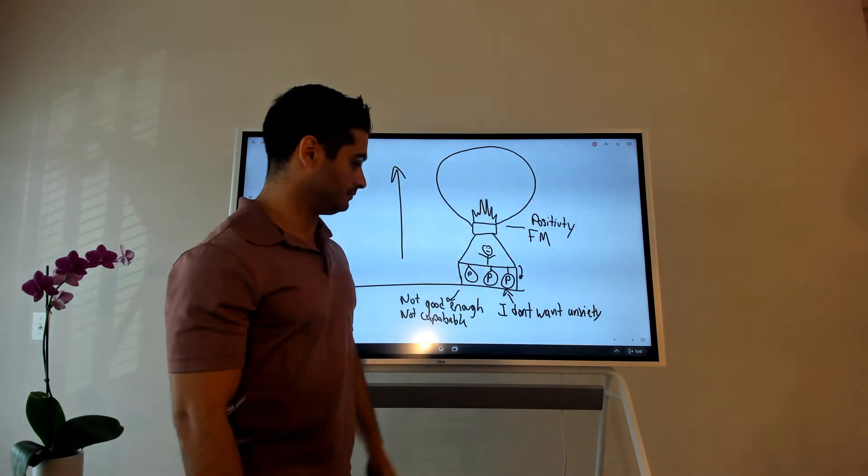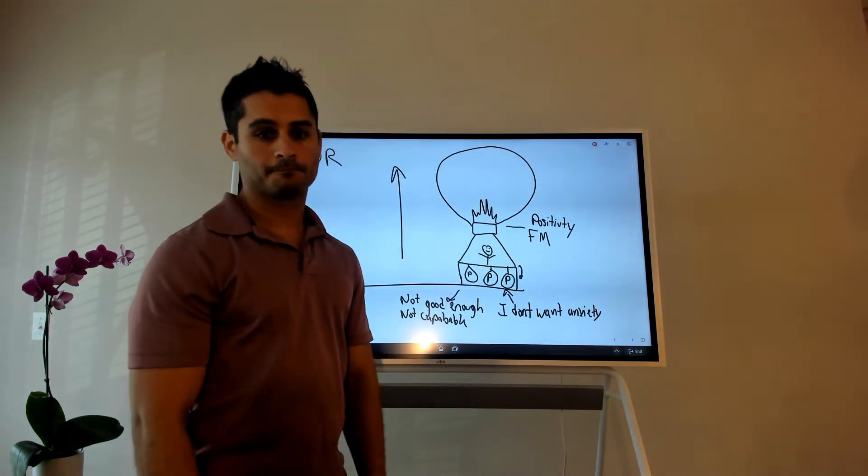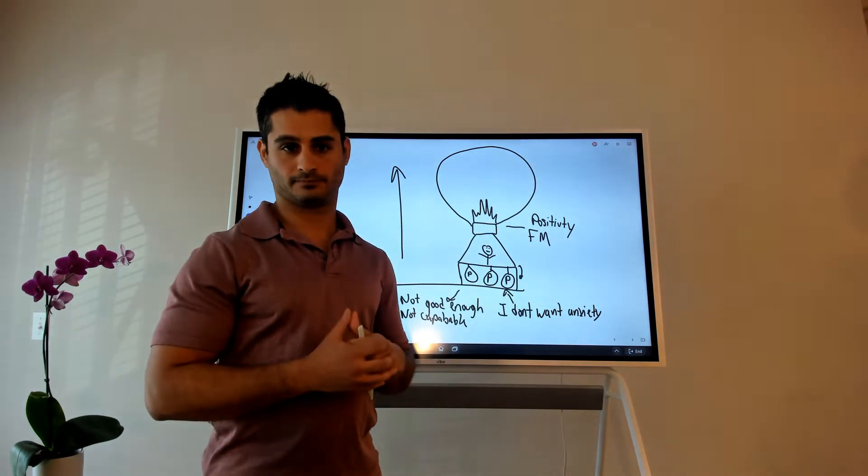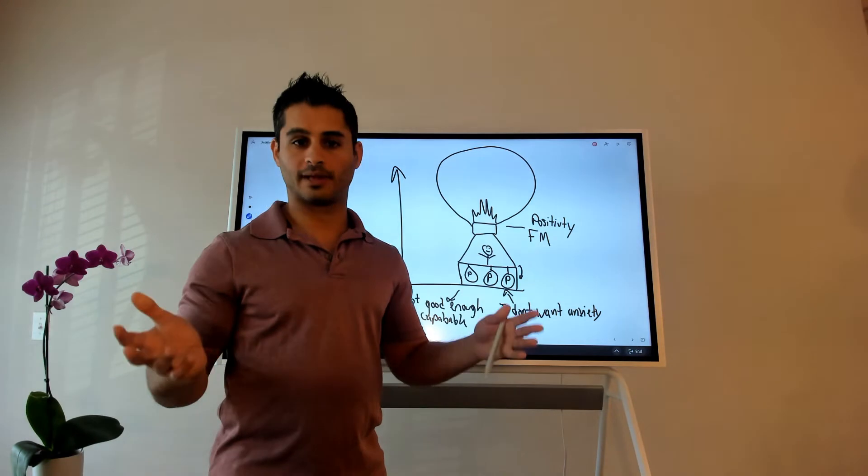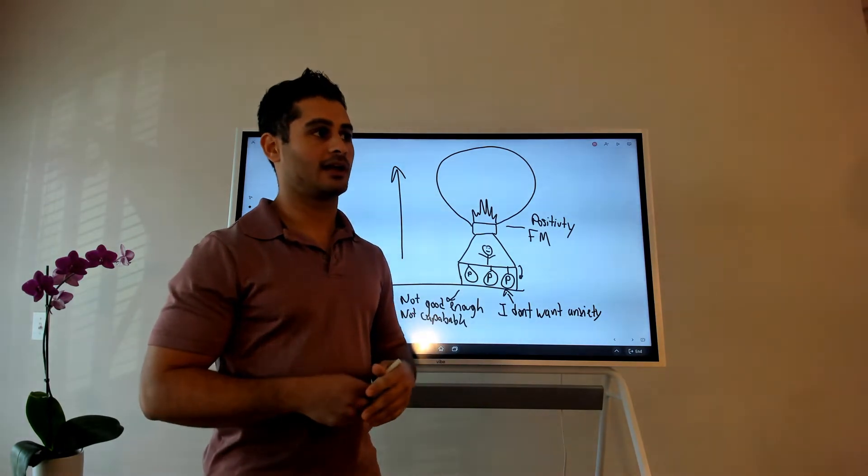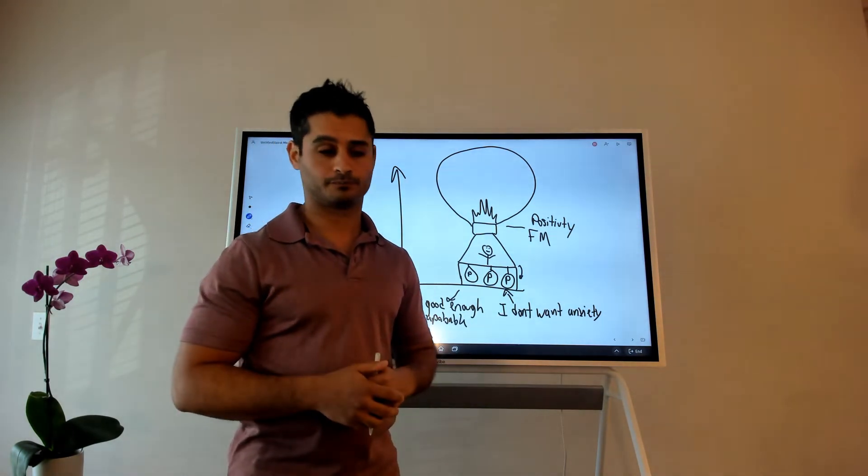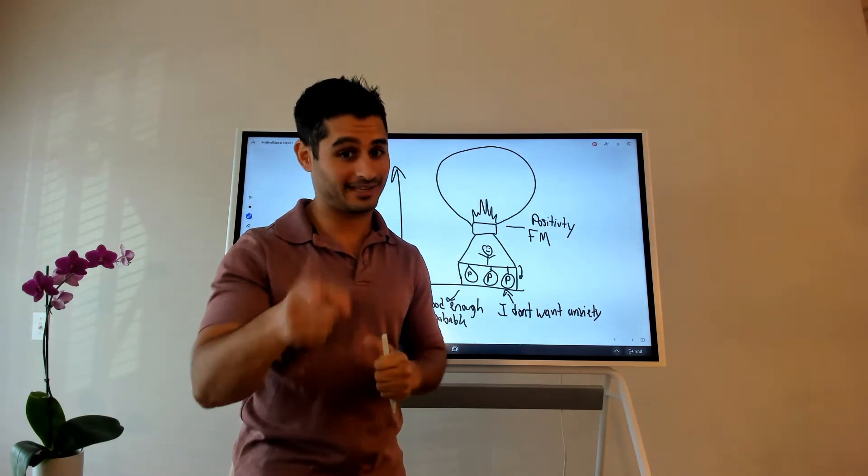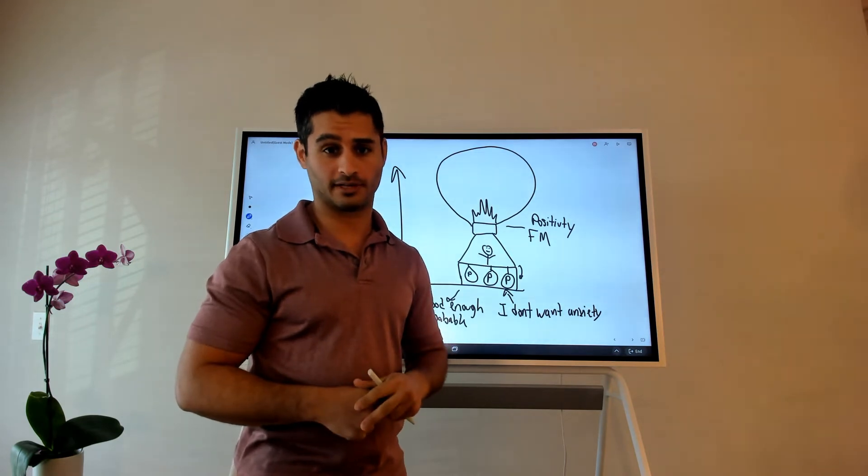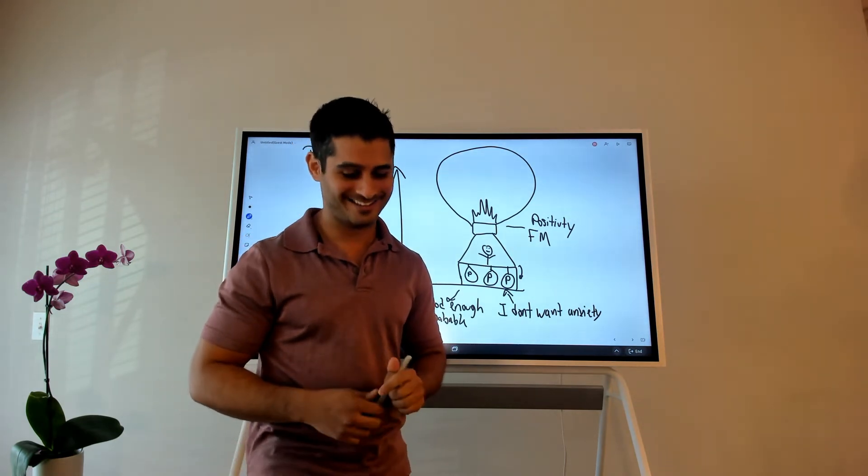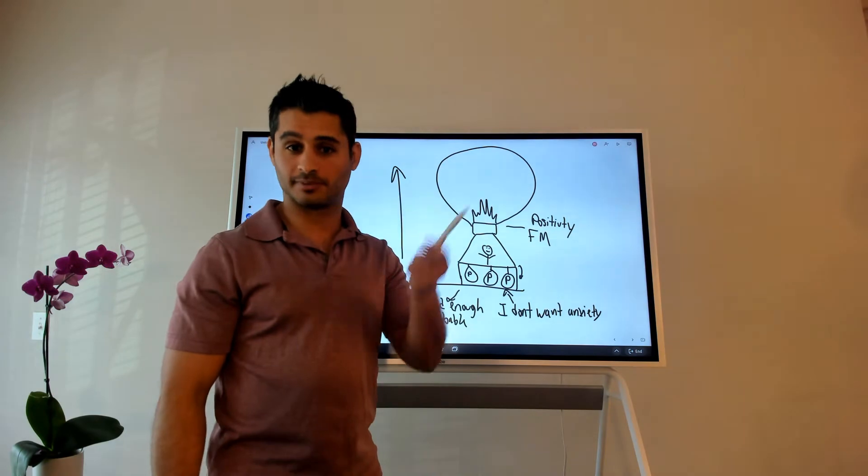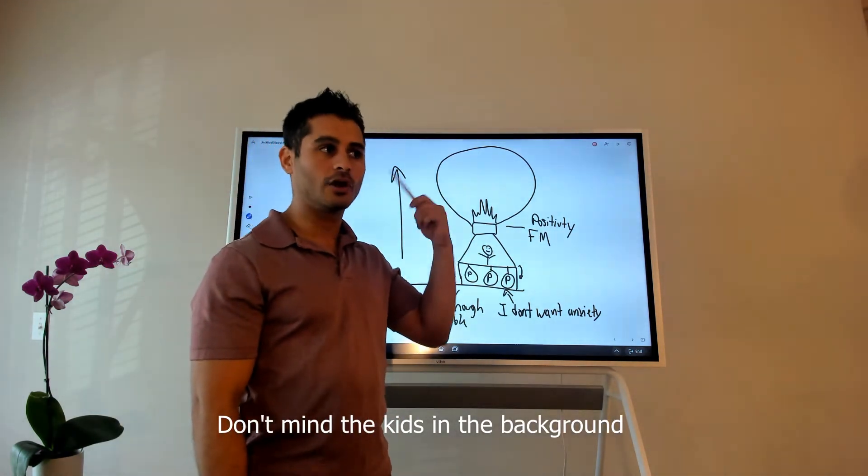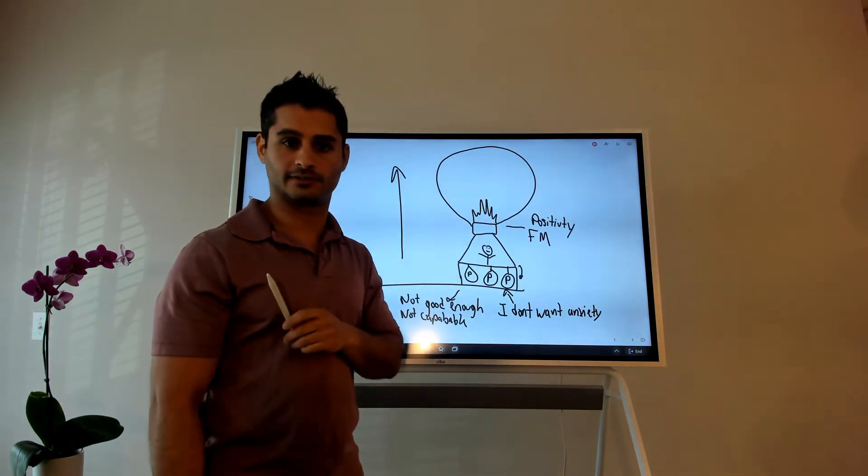When you say these things and when you focus down on these things, when you're putting your energy down here - I don't want anxiety - your body doesn't understand what it doesn't want, so it doesn't take 'don't' commands. So if you say, or I'll give you an example: don't think of a pink elephant, don't think of a pink elephant. I tell you right now don't think of a pink elephant. The first thing that's coming up in your mind is pink elephant.